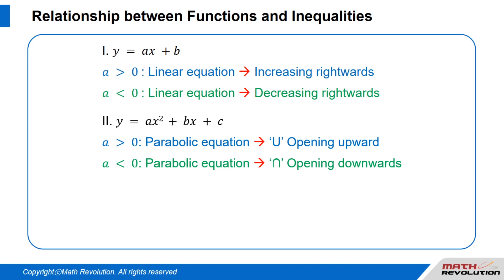When a is smaller than 0 — when a is negative — the parabolic equation will result in an n-shape — a parabola opening downwards.